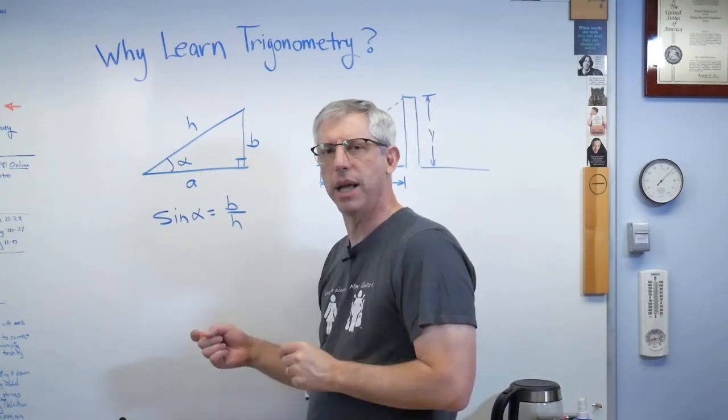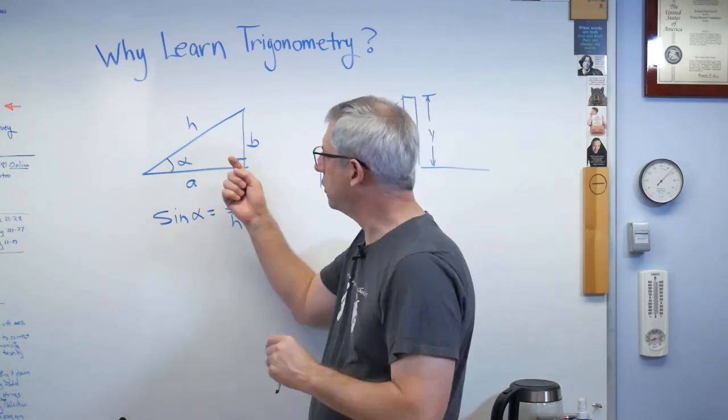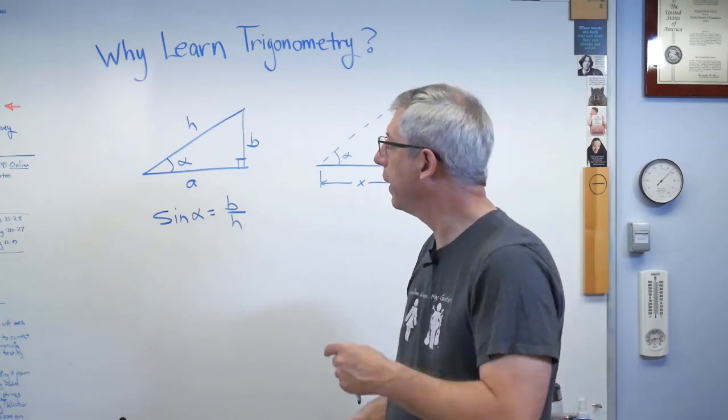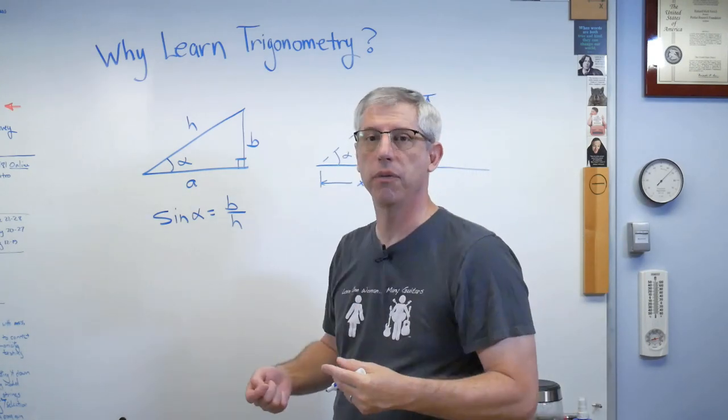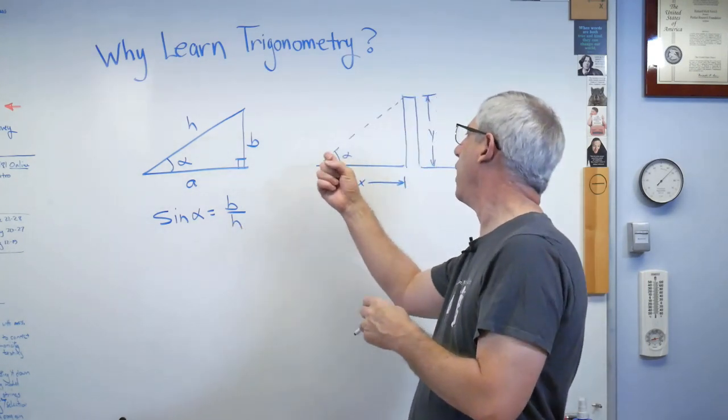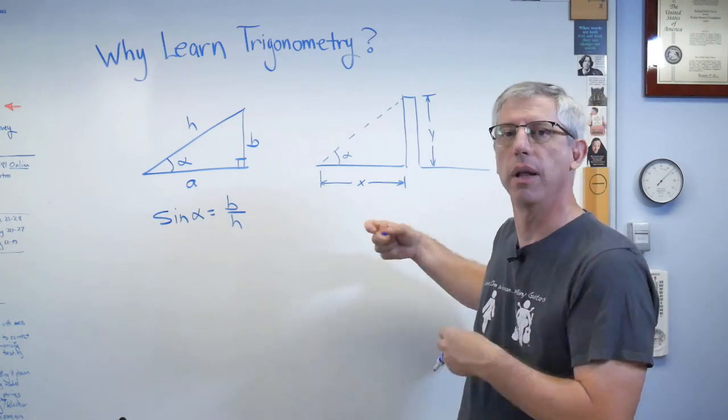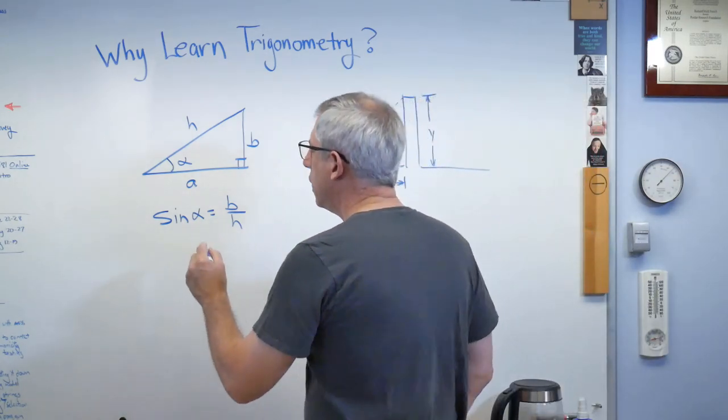What does this mean inherently? Nothing. It's just a relationship between the lengths of two sides of a triangle. It becomes meaningful when we decide it describes something we want to know about. That's when it becomes useful.